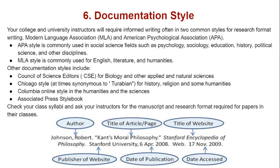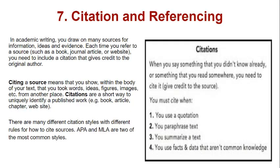Regarding documentation style, your college and university instructors will generally require informed writing in two common styles: MLA — Modern Language Association — and APA — American Psychological Association. These are the two most common styles used for citations and references, though other documentation styles also exist. Check your class syllabi and ask your instructors for the format required for papers in your respective classes. Each time you refer to a source, you need to include a citation that gives credit to the original author. Citing a source means showing within the body of your text that you took words, ideas, figures, or images from another place. Citations are a short way to uniquely identify a published work.